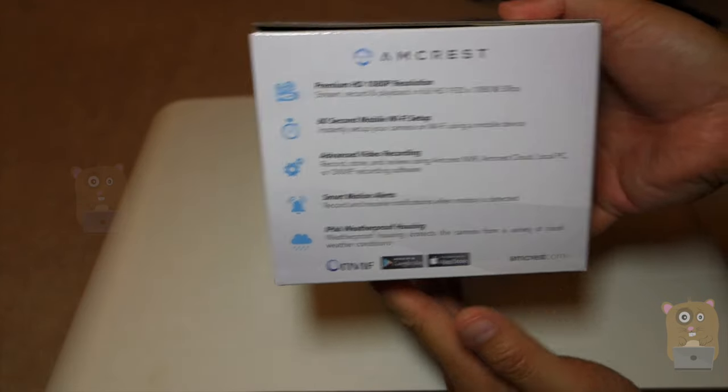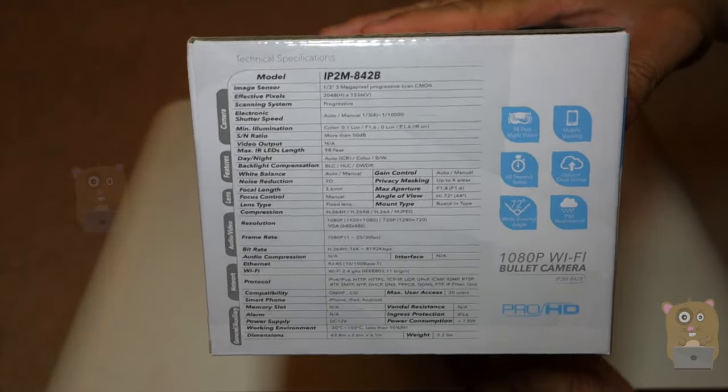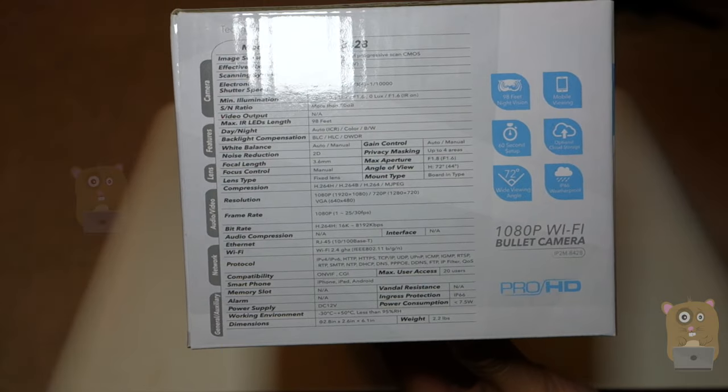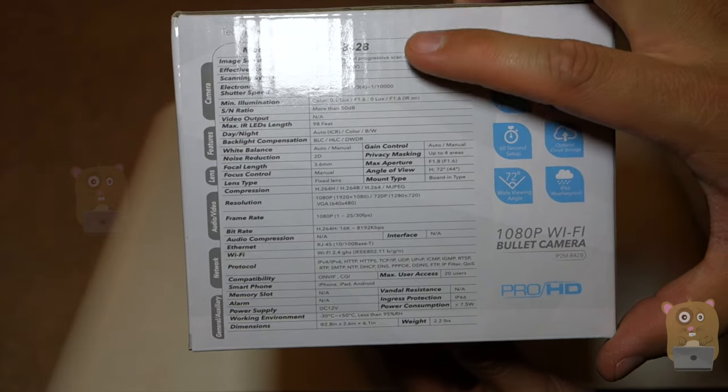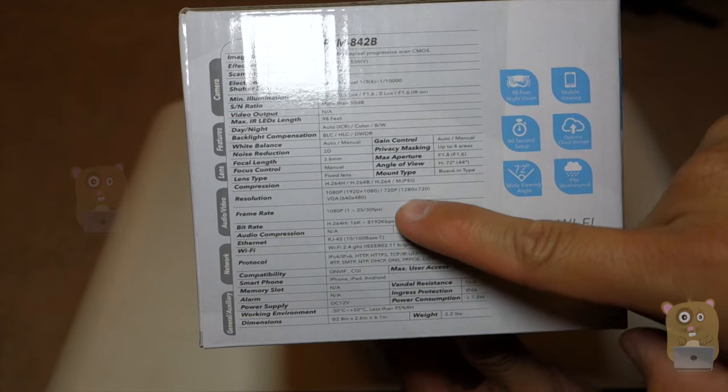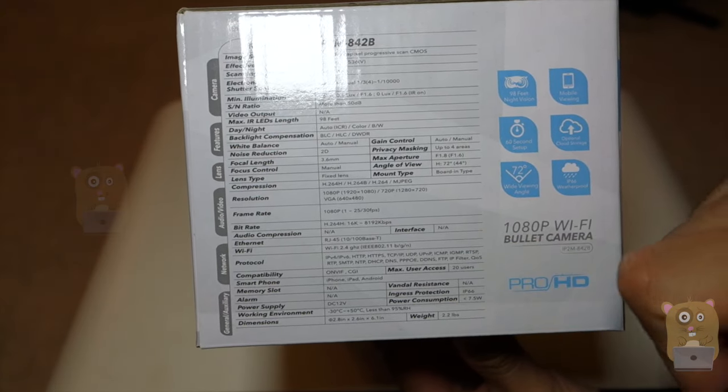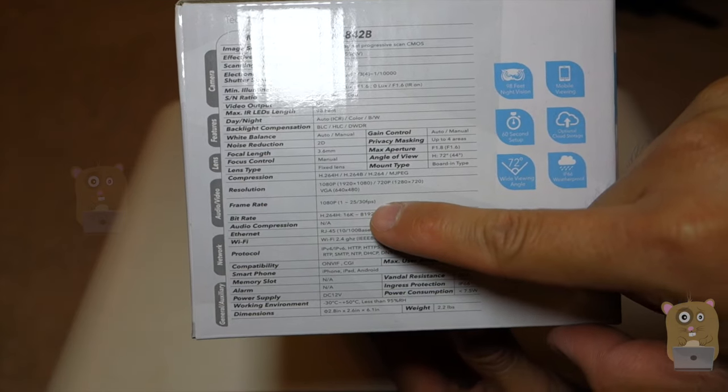Here's some other highlights on the box. Let's show the technical specs for a second here. There's too many to read through, but some of the more important things: it has a 3 megapixel sensor. It offers 1080p, 720p, or VGA. It has a frame rate of at most 30 frames per second.